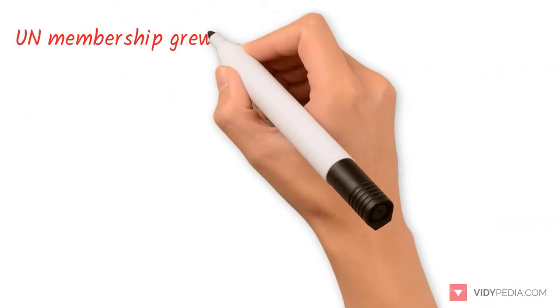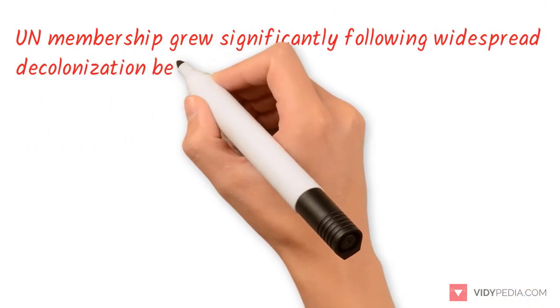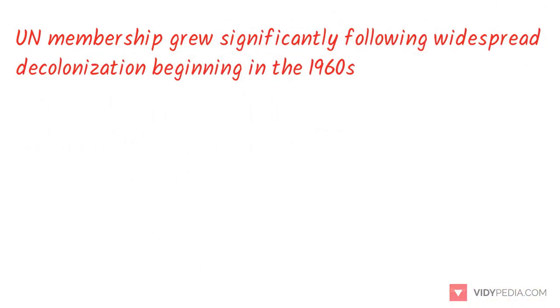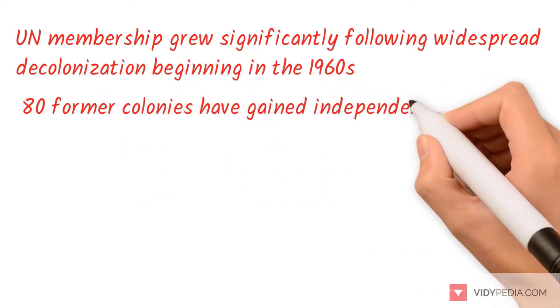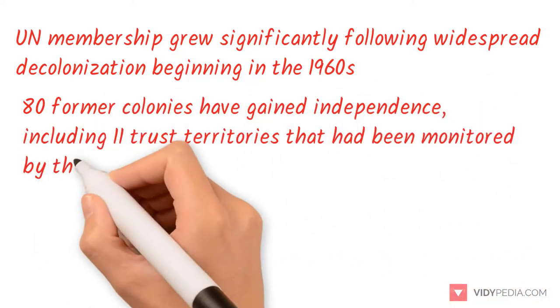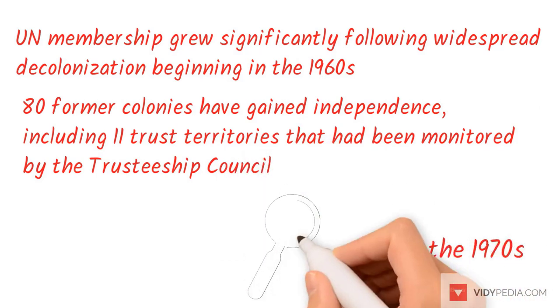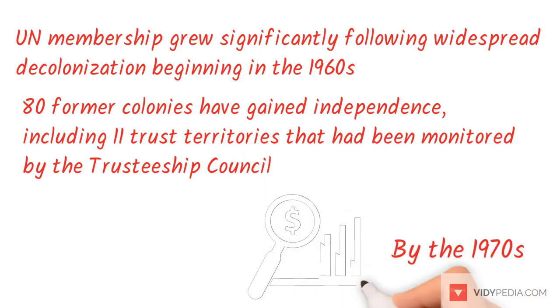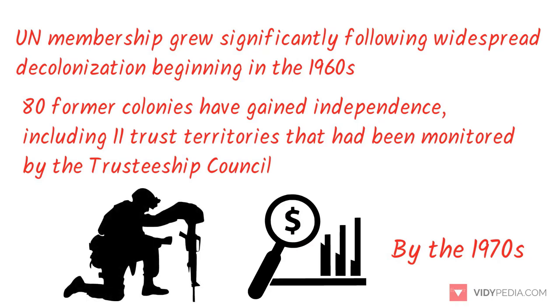UN membership grew significantly following widespread decolonization beginning in the 1960s. Since then, 80 former colonies have gained independence, including 11 trust territories that had been monitored by the Trusteeship Council. By the 1970s, the UN's budget for economic and social development programs far outstripped its spending on peacekeeping.